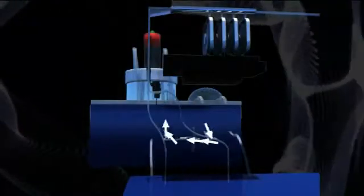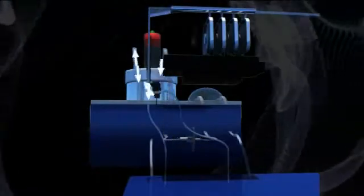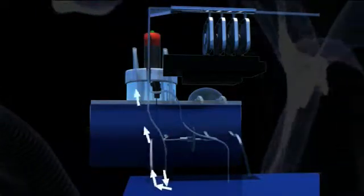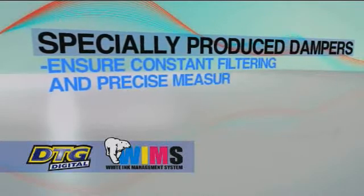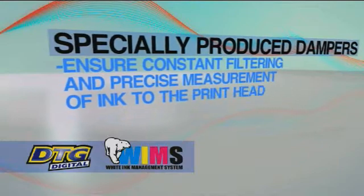White ink is pumped via a peristaltic pump very similar to a heart pump to a reservoir above the dampers, and then back to the container in a sealed closed loop pressurized system. Specially produced pressure release dampers ensure constant filtering and a precise measurement of ink is then fed to the printhead.